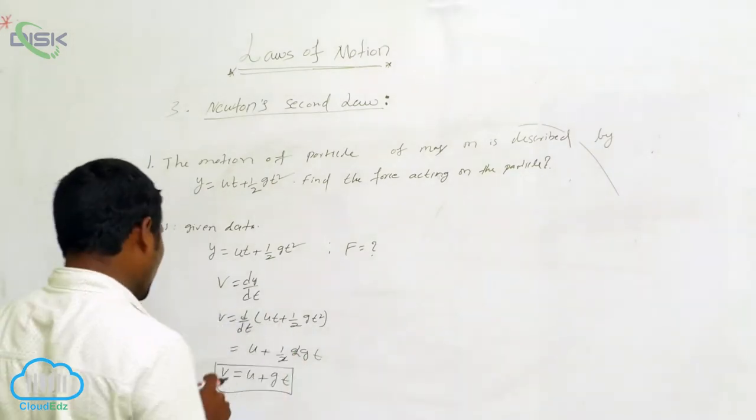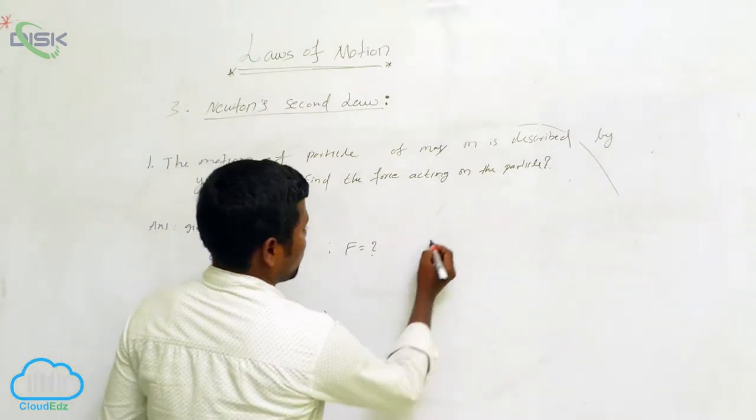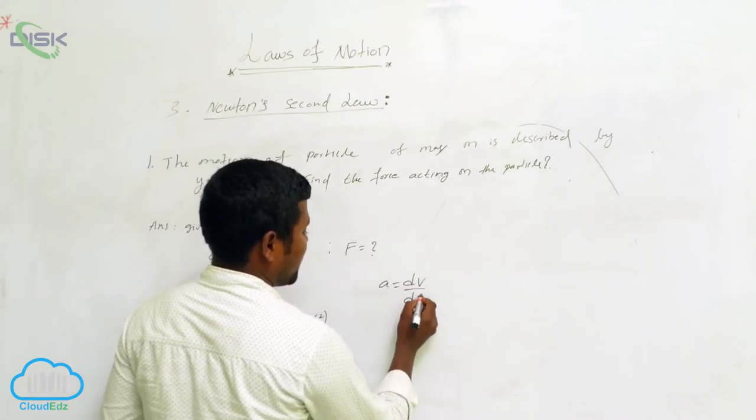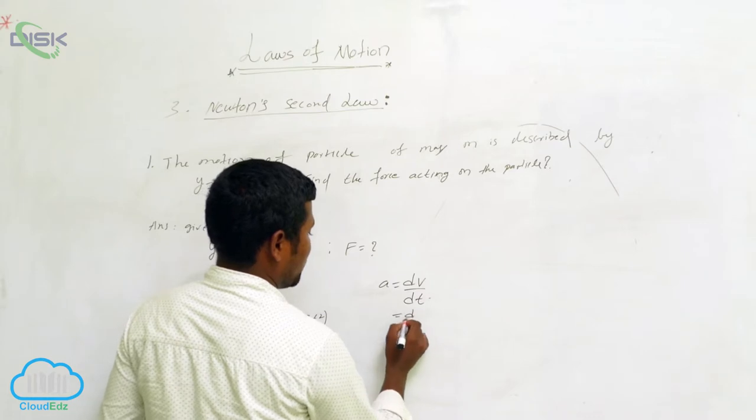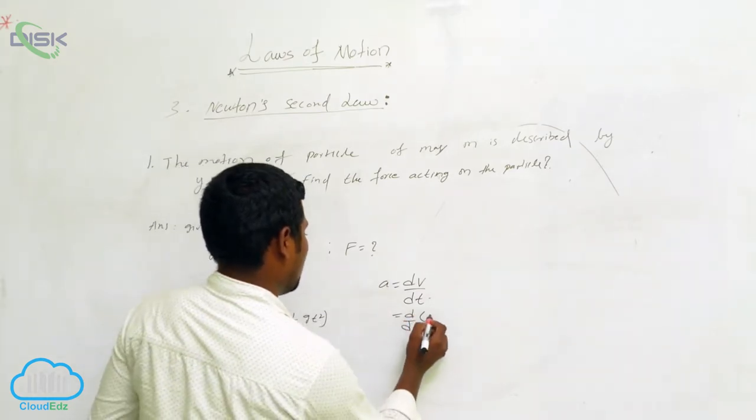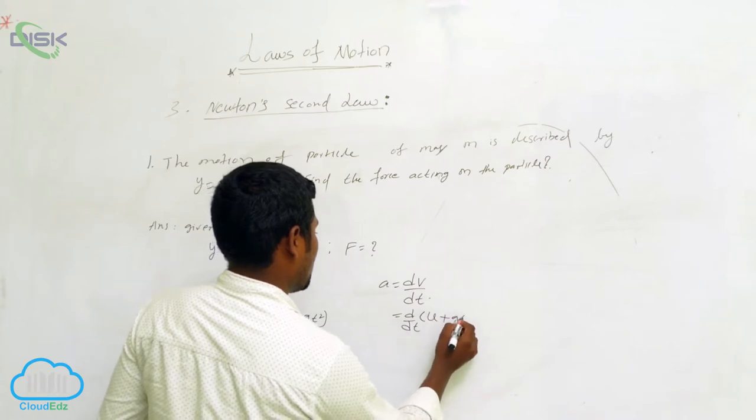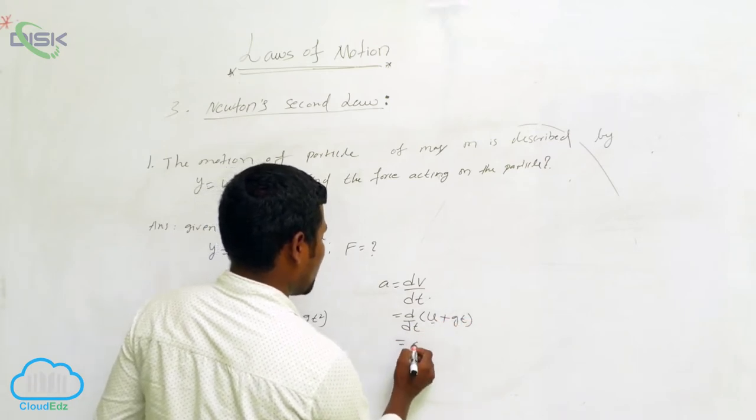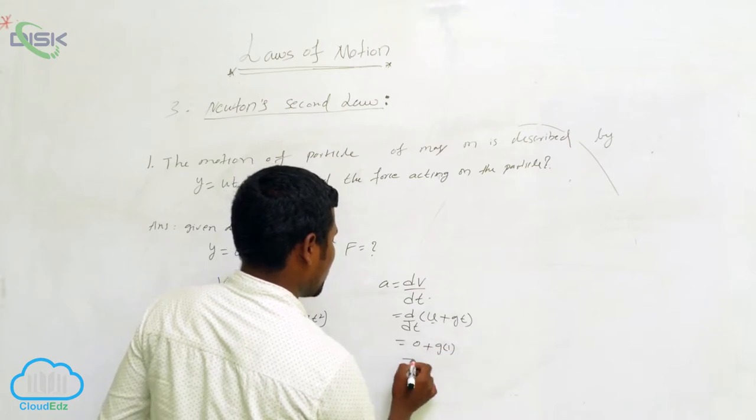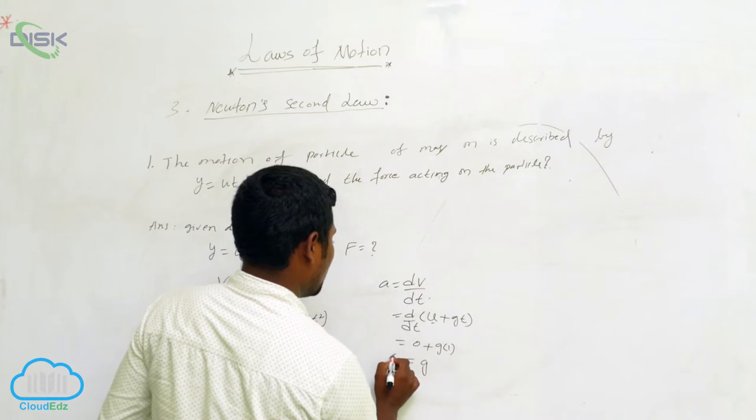Next, what we want? Actually we want acceleration. So a equals what we can write? Already I said dv by dt. So dv by dt, though v equals how much we are having? u plus gt. Then this is a constant, automatically zero. Then this is gt. Next what happens? g, which equals a.